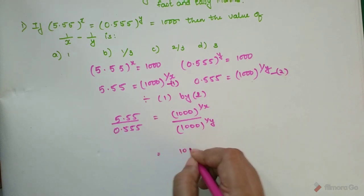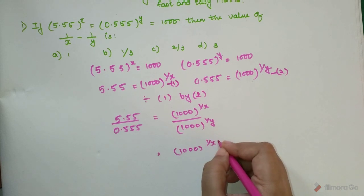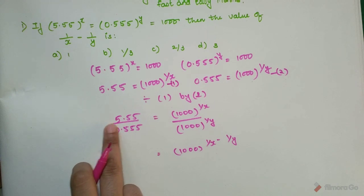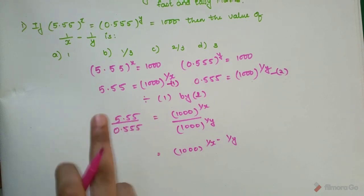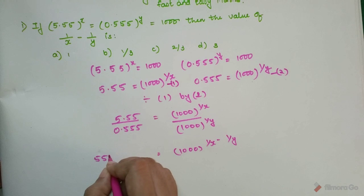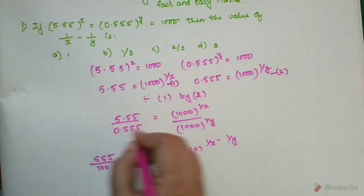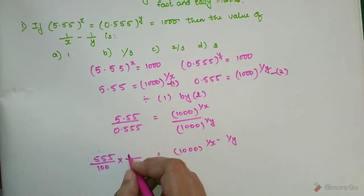This can be now written as 1/x - 1/y. And 5.55 can be written as 555/100, and let's write this on a separate fraction, so 0.555 can be written as 555/1000.